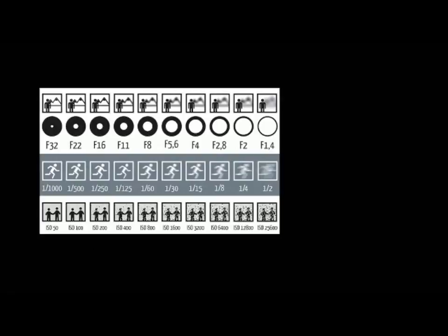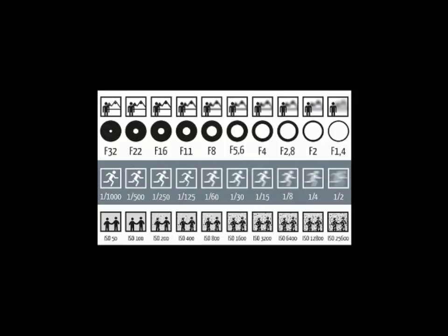The next slide gives a good overall presentation. The top three lines represent aperture from F32 down to F1.4. The circles represent the opening where light goes through your lens — at F32 you have a small opening, at F1.4 a large opening. The size of the aperture determines how much depth of field you have in focus. When wide open at F1.4, whatever's behind or in front of your subject will probably be blurry. If you need more things in focus, you stop down to F5.6, F8, F16.